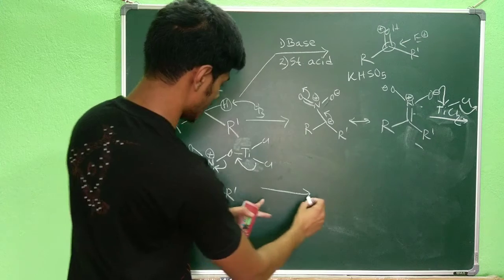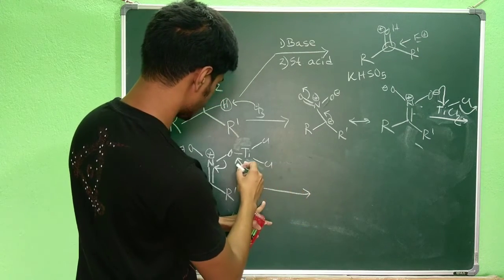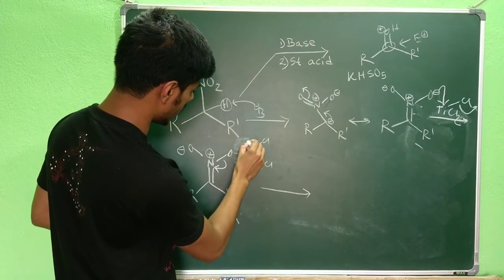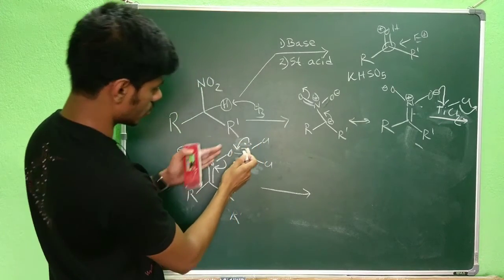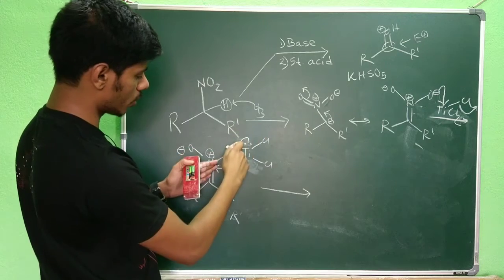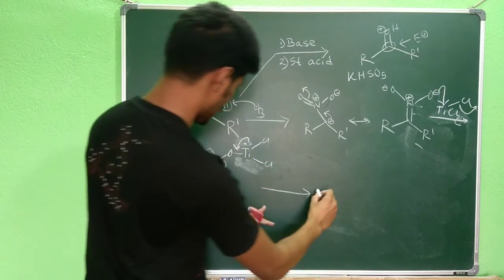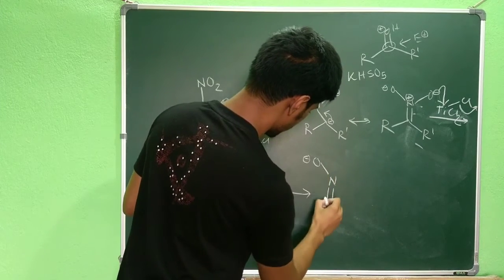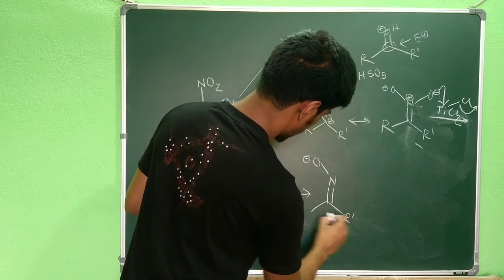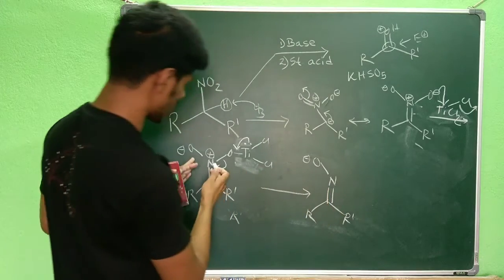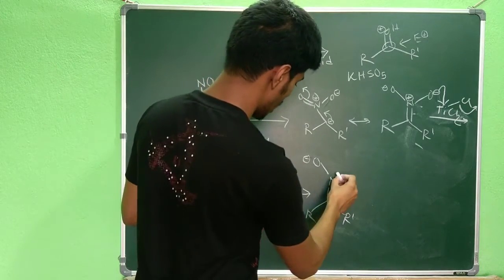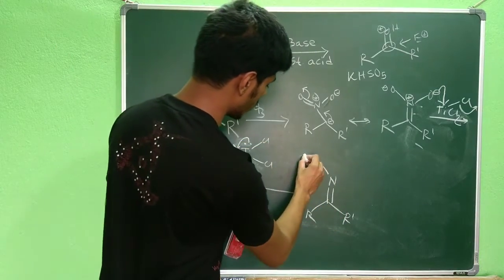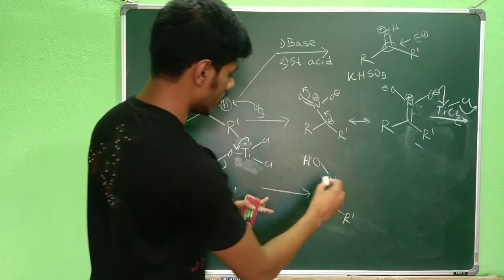As titanium is oxidized by accepting electron density, the nitrogen center which was positively charged becomes neutral. If you push the titanium lone pair toward the oxygen, this bond breaks and you have a neutral oxygen. The nitrogen, previously a positively charged center, becomes neutral.